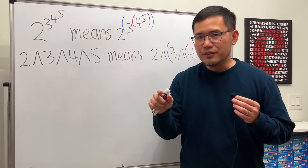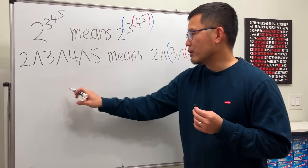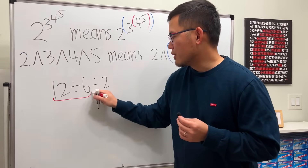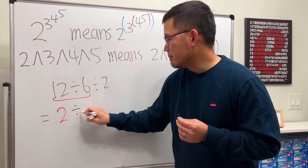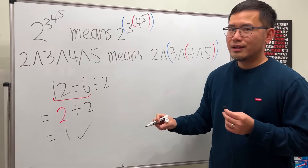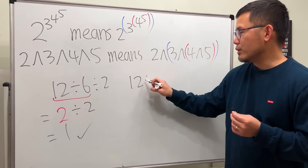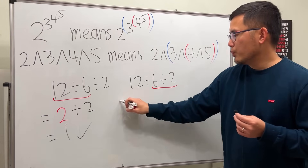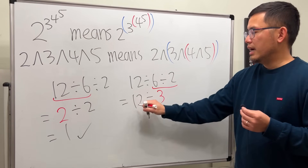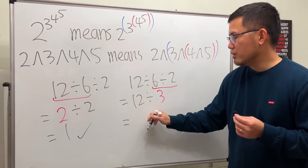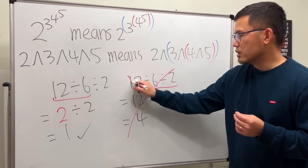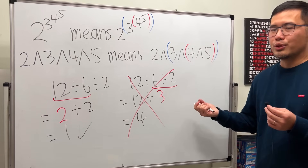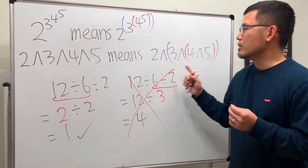This is a bit tricky because when all operations are the same we normally go left to right. For example, 12 divided by 6 divided by 2 — proceed left to right: that gives 2, then divide by 2, the answer is 1. But if you do it right to left: 6 divided by 2 is 3, then 12 divided by 3 is 4 — that's the wrong order of operations. Exponentiation is a special case where right-to-left is correct.